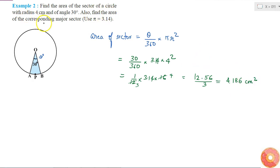Also, I have to find the area of the corresponding major sector. The sector having theta less than 180 degrees is called a minor sector, and the sector having theta greater than 180 is called a major sector. Major sector means the area of the remaining portion.